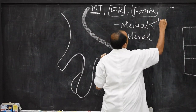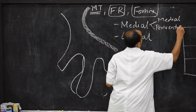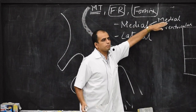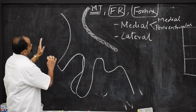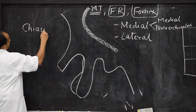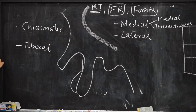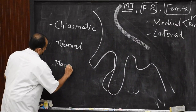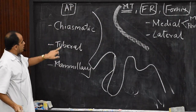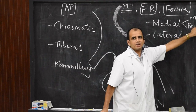The medial zone can again be divided into two parts: the medial proper (also called intermediate) and the periventricular zone. So there are three zones from medial to lateral: periventricular zone, medial zone, and lateral zone. Going from anterior to posterior, the hypothalamus is divided into three regions: the chiasmatic region, the tubular region (also called the tuberoinfundibular region), and the mammillary region.